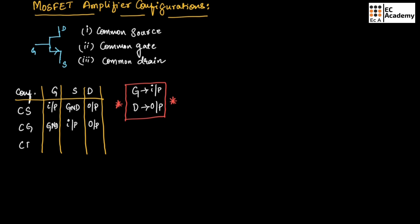In common drain configuration, drain is connected to ground, so drain is common between input and output. Gate is preferred as the input terminal, and that is why source is taken as the output side.